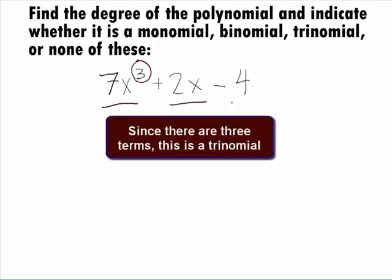Since the terms of the polynomial are separated by pluses and minuses, it looks like we have 3 terms: 7x to the 3rd power, 2x, and negative 4 in this example. This means that the answer to the second part of this is the polynomial is a trinomial.